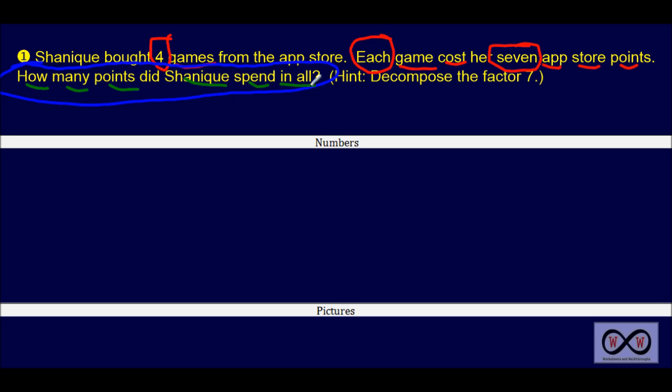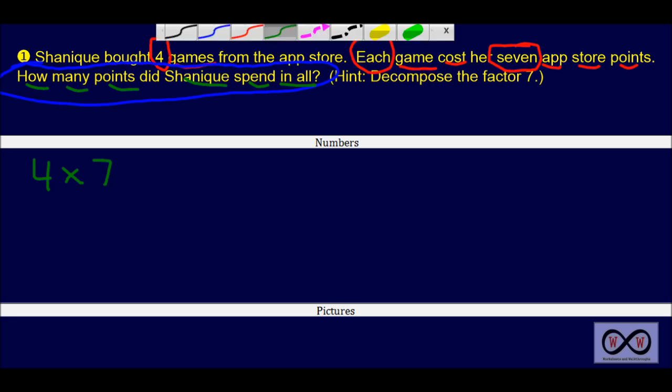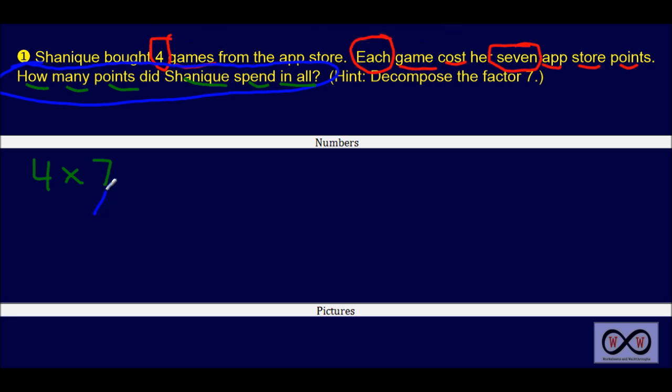So now we can think about that. We've got four games that she bought and each costs seven points. You can think of that as four games and each game costs seven App Store points — four groups of seven. Now, you might not know exactly how to solve this one right off the bat. However, you can decompose the seven, or either one of the factors, to solve a simpler problem.